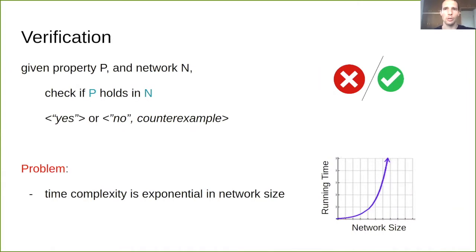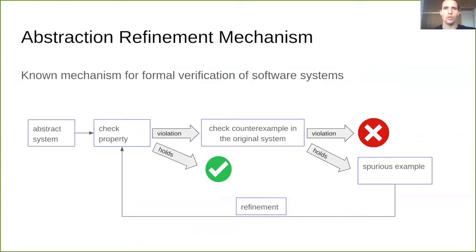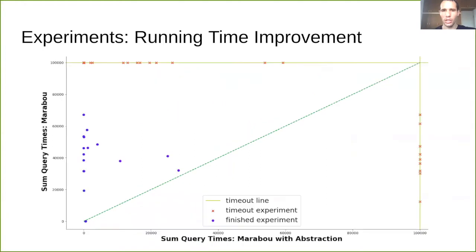Verification is an NP-complete problem and is actually exponential in the number of nodes in the network. In our work, we over-approximate the given network with a smaller one and enable proving or disproving the property in the original network using the smaller network. We leverage the counter-abstraction refinement mechanism for neural networks, where abstraction is over-approximation and refinement is over-approximation tightening as much as needed. According to our experiments, our work significantly improves the verification performance.